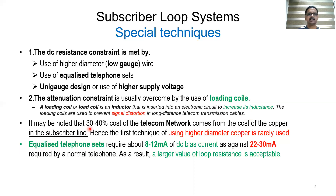It may be noted that 30 to 40 percent of the cost of the telephone network comes from the cost of the copper in the subscriber line. Hence the first technique of using higher diameter copper is rarely used. Using higher diameter wire is one solution, but the practical problem is that 30 to 40 percent of your network cost depends upon the cost of the subscriber loop — the copper pair. So in normal practice we don't use this except in real circumstances.